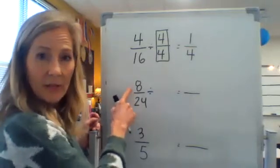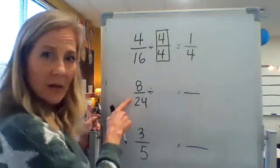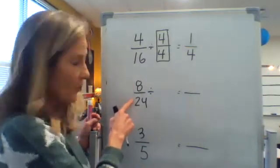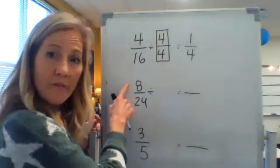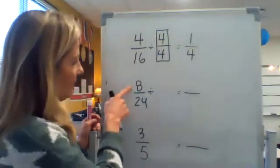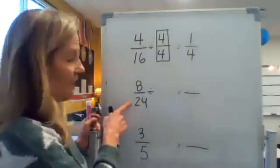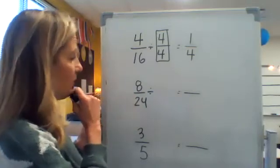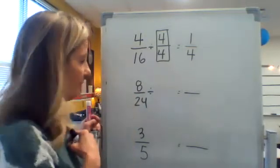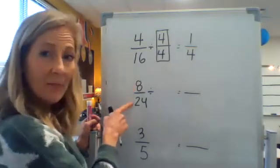And I'm thinking four, right? Four times something gets me eight and four times something gets me 24. So they're both multiples of four. Is there another bigger one? And I'm seeing that they can both be divided by eight.